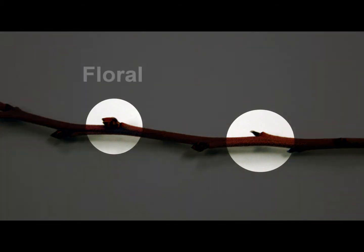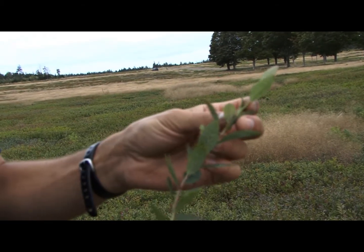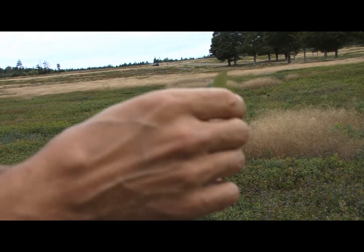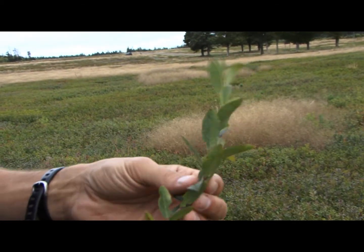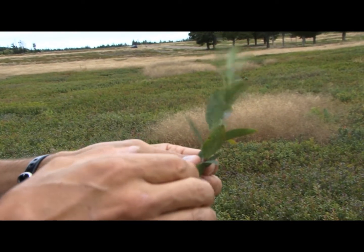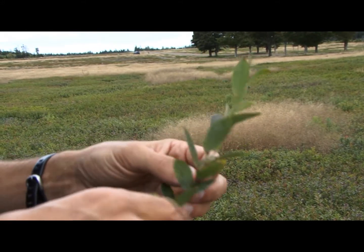This stem shows the swollen floral buds near the top of the stem and the thinner, narrower buds which are vegetative — typically you see them lower in the stem. Here we're looking at one of the 30 stems that we take in a field. We count the number of floral buds on the stem, count the total number of floral buds on all 30 stems, and then determine the average number of floral buds per stem.